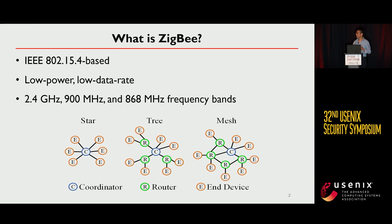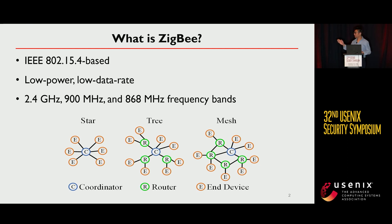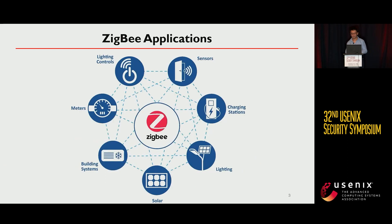Let me briefly introduce Zigbee. Zigbee is an IEEE 802.15.4-based wireless communication protocol designed for low-power, low-data-rate wireless networks. It can operate on three frequency bands: 2.4 GHz, 900 MHz, and 868 MHz. As shown in the figure, the Zigbee network can support three network topologies: star, tree, and mesh. Zigbee has been widely used in many application scenarios such as home automation and industrial automation.